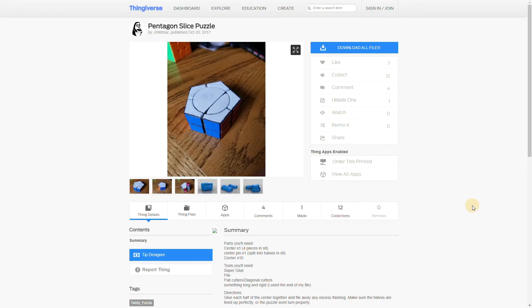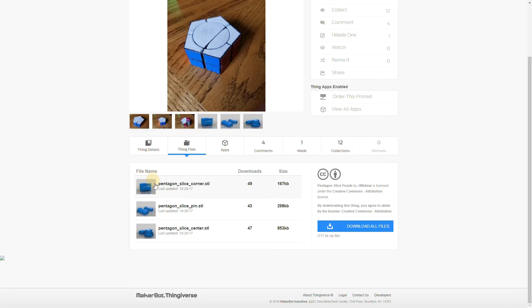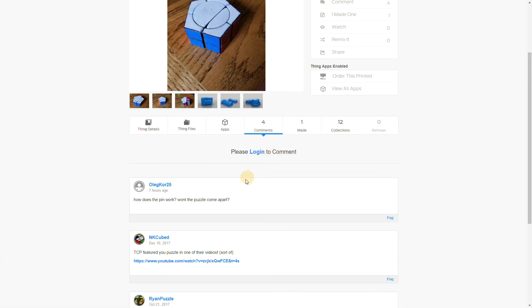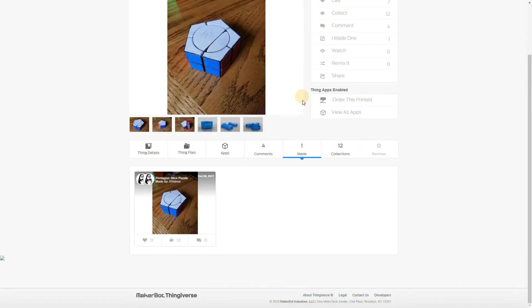This is the puzzle site, where you'll find instructions, files, and comments. The description contains printing instructions, as well as assembly instructions. The files for the puzzle are all under the Files tab, and the Comments section is where you can write what you think of the design. In addition, you can post pictures of your own prints of this design on the Make section.